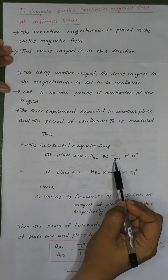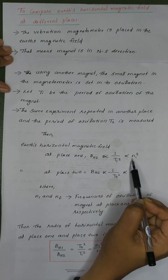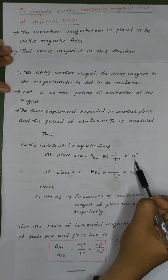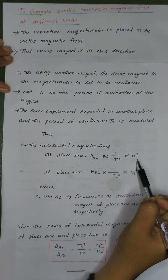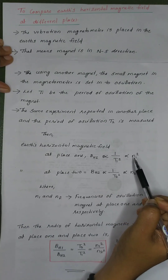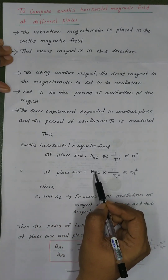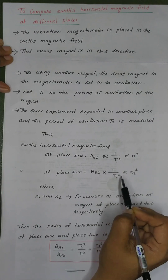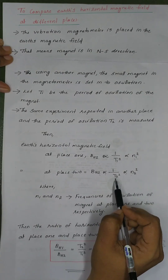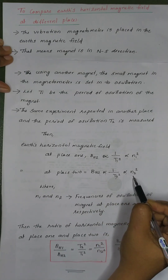The period of oscillation T1 gives 1 by T1 squared proportional to N1 squared. At place 2, the Earth's horizontal magnetic field is represented as BH2, which is proportional to 1 by T2 squared, and also proportional to N2 squared. Here T2 is the period of oscillation at place 2 and N2 is the frequency of oscillation at place 2.